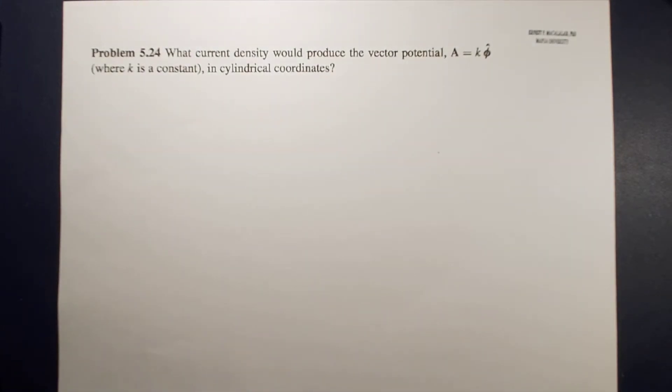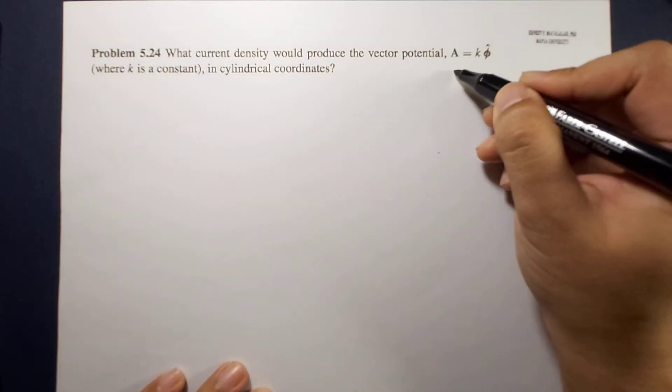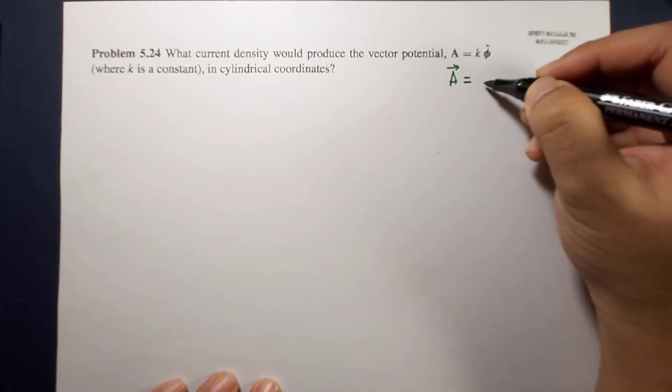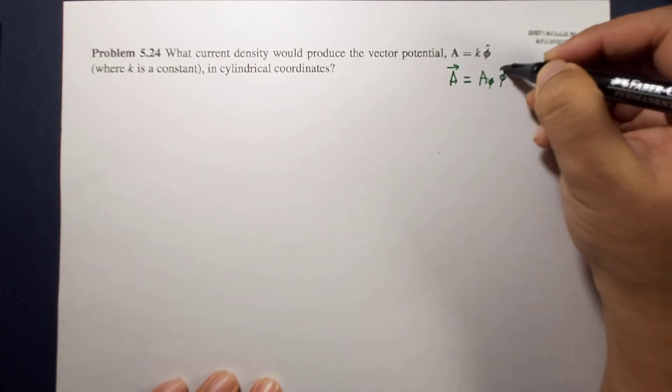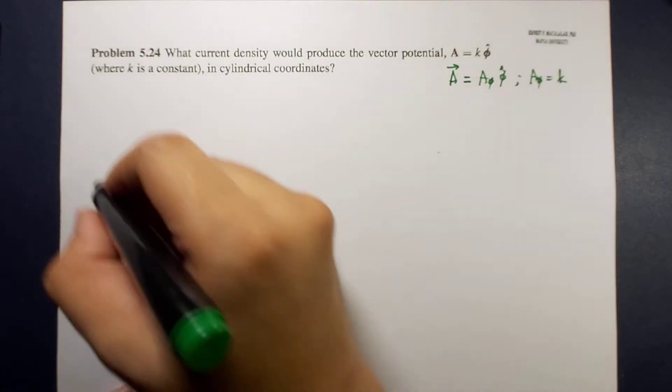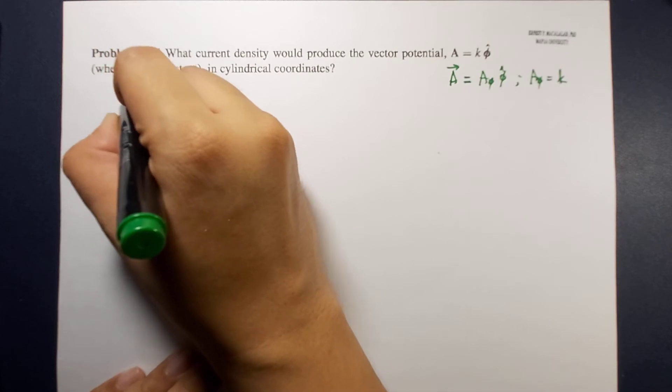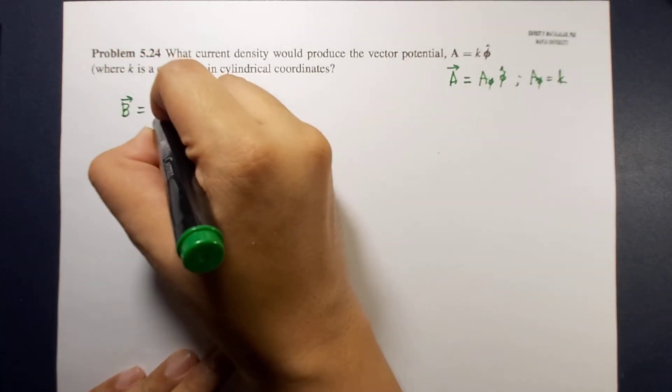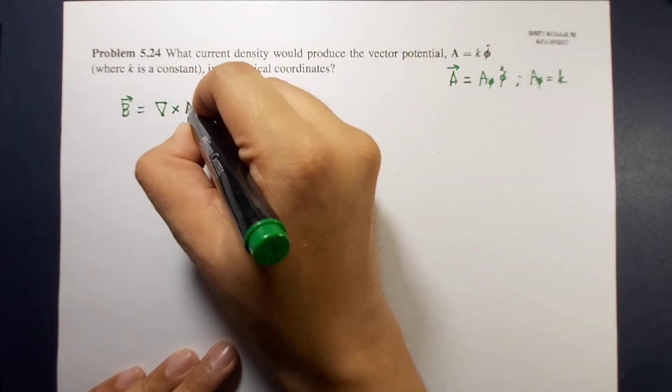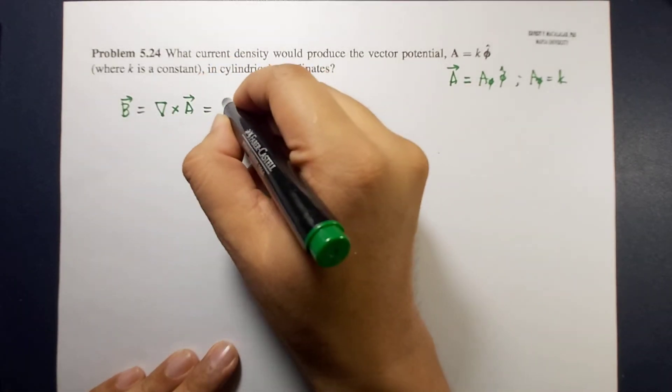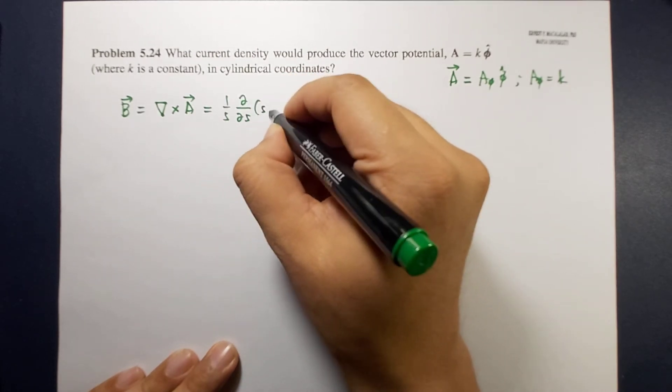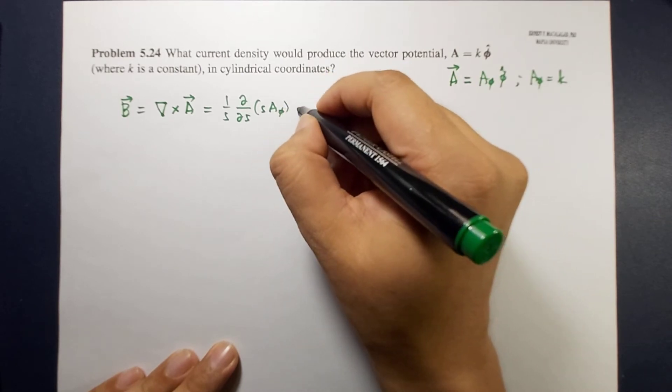You will notice here that our magnetic vector potential only has one component, and that is along the phi component, which is equal to a constant. So in cylindrical coordinate system, the magnetic field, which is related to the magnetic vector potential, is the curl of A, and this is equal to 1 over s times the partial derivative of s times s A phi z hat.